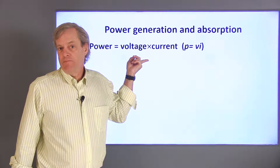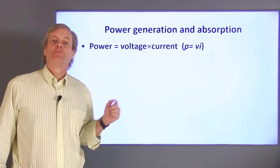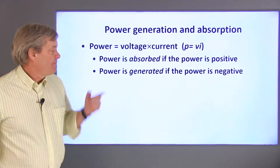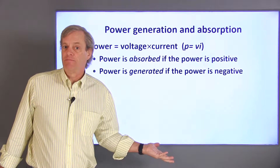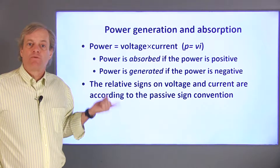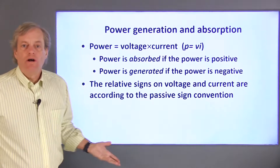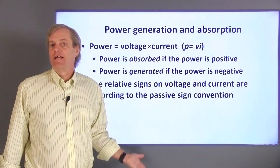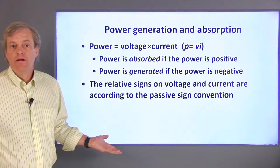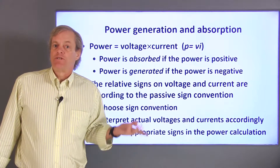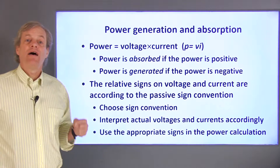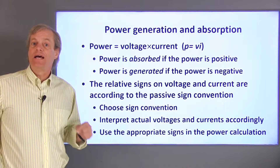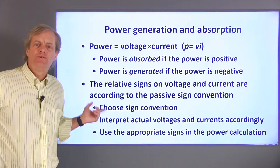Electrical power is the product of voltage and current for a circuit element. Whether the element is absorbing or generating power can be determined by the sign of the power. If the power is positive, the element is absorbing power — it's converting electrical energy to some other form. If the power is negative, the element is generating power — it's providing electrical energy to the circuit. The passive sign convention determines the relative signs on voltage and current in the power calculation. In the passive sign convention, the assumed positive current enters the assumed positive voltage terminal. The sign convention for either voltage or current can be chosen arbitrarily, so probably the most reliable approach is to choose an arbitrary sign convention according to the passive sign convention. Once you have your sign convention, interpret your actual voltages and currents according to that sign convention, then use the voltages and currents with the appropriate signs to calculate the power.